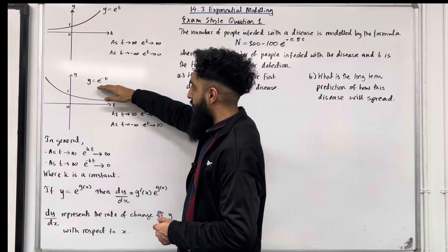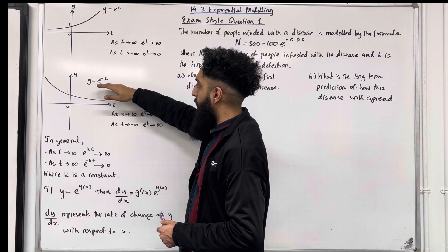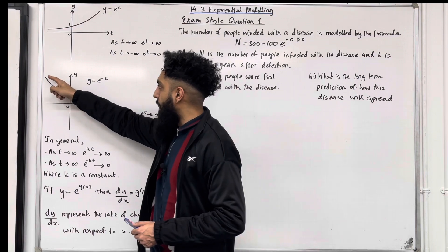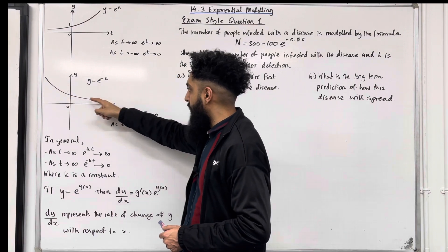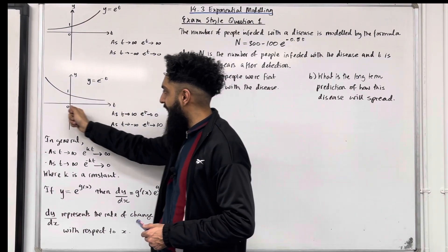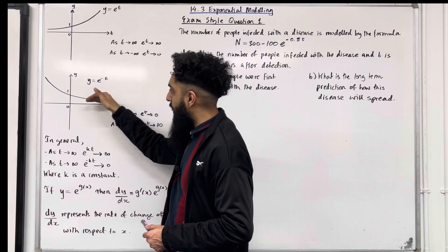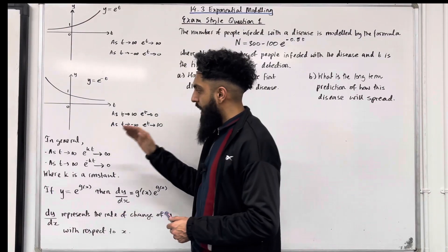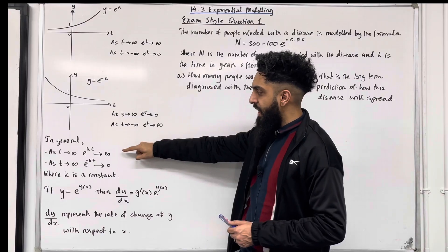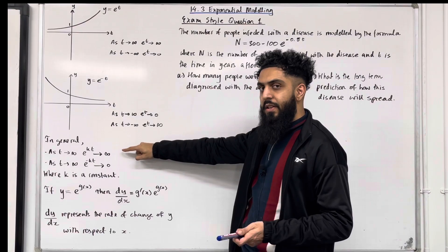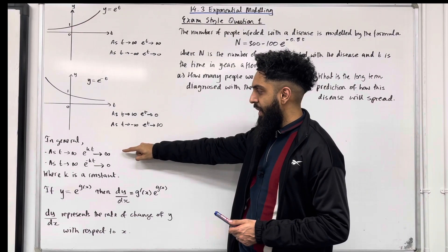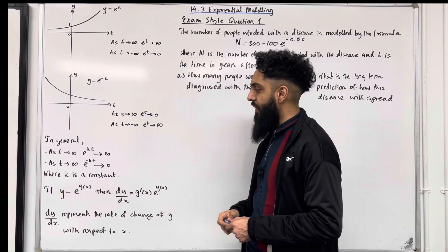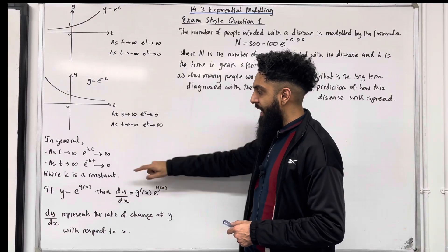Let's have a look at the graph of y = e^(-t). As t tends to infinity, e^(-t) tends to zero. As t tends to negative infinity, e^(-t) tends to infinity. In general, as t tends to infinity, e^(kt) tends to infinity, and as t tends to infinity, e^(-kt) tends to zero, where k is a constant.